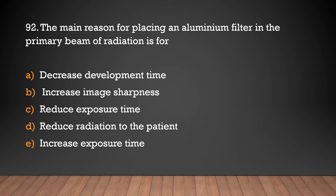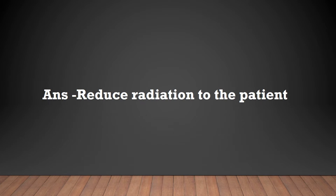The main reason for placing an aluminium filter in the primary beam of radiation is for: decreased development time, increased image sharpness, reduced exposure time, reduced radiation to the patient, increased exposure time. Answer: Reduced radiation to the patient.